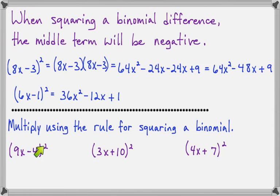9x minus 4 squared will give us first times first, 81x squared. The middle term will be 9x times negative 4, which is negative 36x times 2, makes negative 72x. And last times last makes plus 16. On 3x plus 10 squared, we'll get 3x times 3x, which is 9x squared. The middle term will be 3x times 10, 30x times 2, which is 60x. And last times last gives us plus 100.